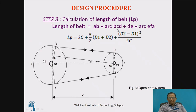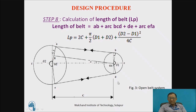Next, we calculate the length of the belt, which depends on whether the system is open or crossed. For an open belt, the length consists of arc AB, arc BCD, length DE, and arc AFE. The formula is: L = 2C + (π/2)(D1 + D2) + (D2 − D1)²/4C. For a crossed belt, the belt crosses between pulleys, increasing length for the same center distance, so the formula becomes L = 2C + (π/2)(D1 + D2) + (D2 + D1)²/4C.